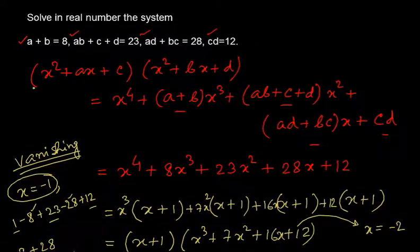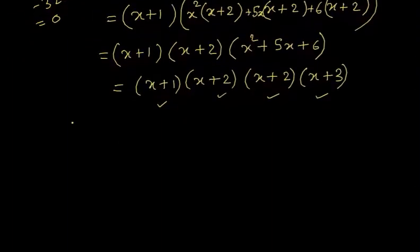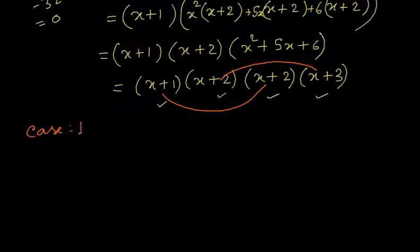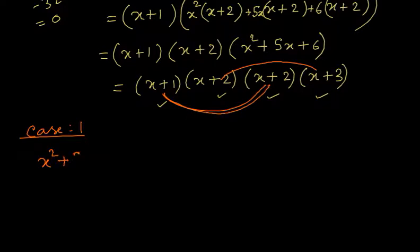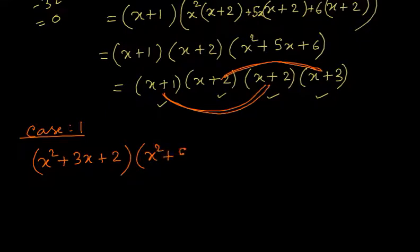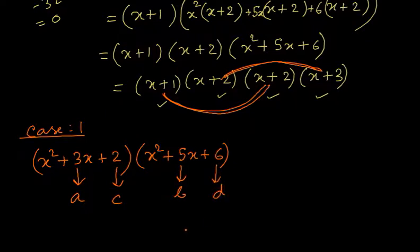Now we need to express this whole thing as a product of two quadratics. We can club (X+1)(X+2) and (X+2)(X+3) — that is one possibility. Clubbing (X+1) and (X+2) gives the quadratic factor X² + 3X + 2, and multiplying (X+2)(X+3) gives X² + 5X + 6. We compare: A = 3, B = 5, C = 2, D = 6 on comparison.